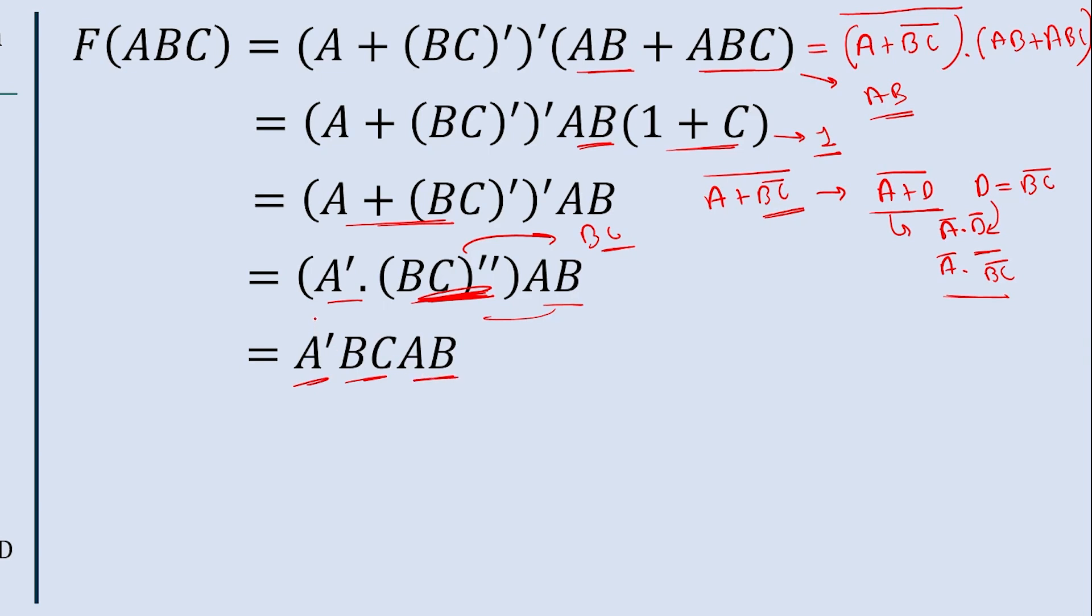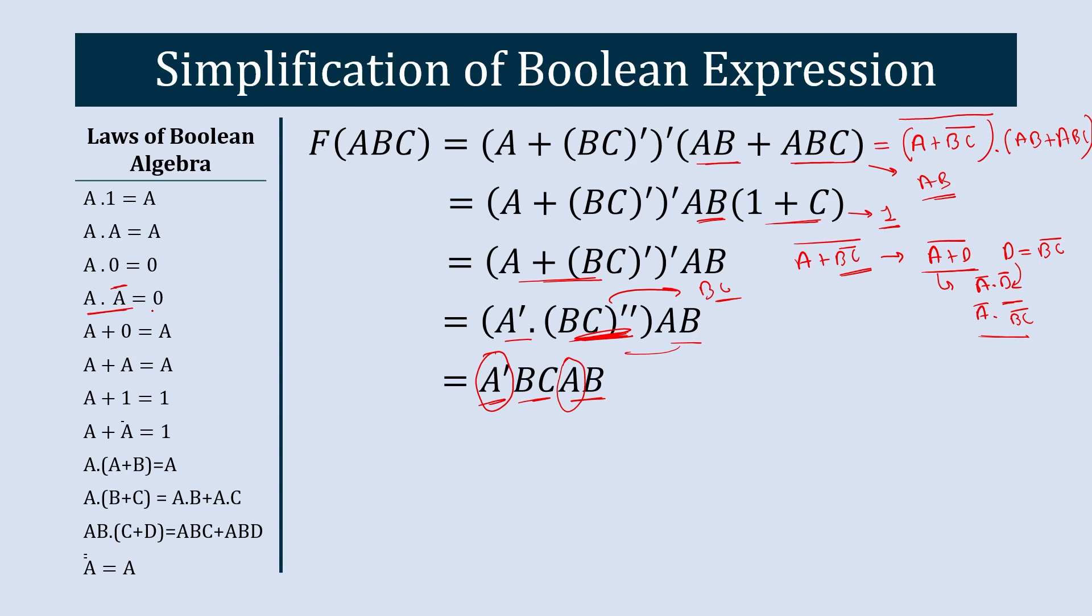Now here you see we have A bar and here we have A. So when A multiplies with A bar, that results into 0. So the final result of this term will be equal to 0. So this is the simplified version of this Boolean expression.